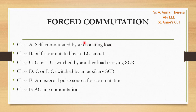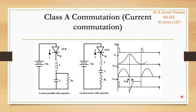There are classifications in forced commutation: Class A, B, C, D, E, and F. In Class A, the SCR is self-commutated by a resonating load. In Class B, the SCR is self-commutated by an LC circuit. In Class C, a capacitor C or LC circuit is switched by another load carrying SCR. In Class D, C or LC are switched by an auxiliary SCR. In Class E, an external pulse transformer is used for commutation. In Class F, it is also called AC line commutation.